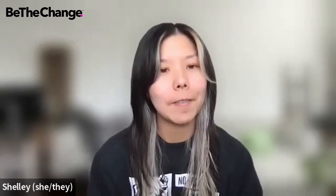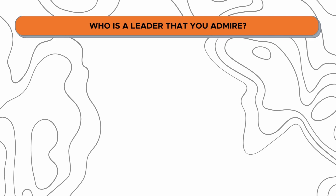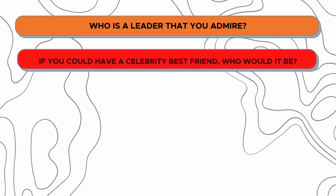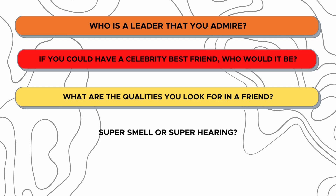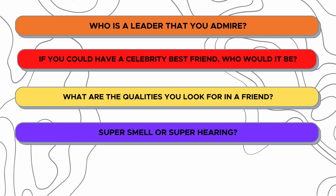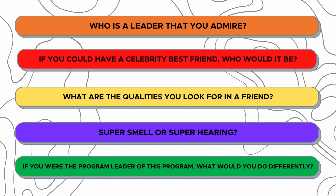Some sample questions we love to ask in this activity: for orange — who is the leader you admire? For red — if you could be best friends with a celebrity, who would you pick? For yellow — what is the quality you look for in a friend? For purple — would you rather have a super sensitive sense of smell or super sensitive hearing? And if they chose a green Skittle, they answer: if you were the program leader, what would you do differently?